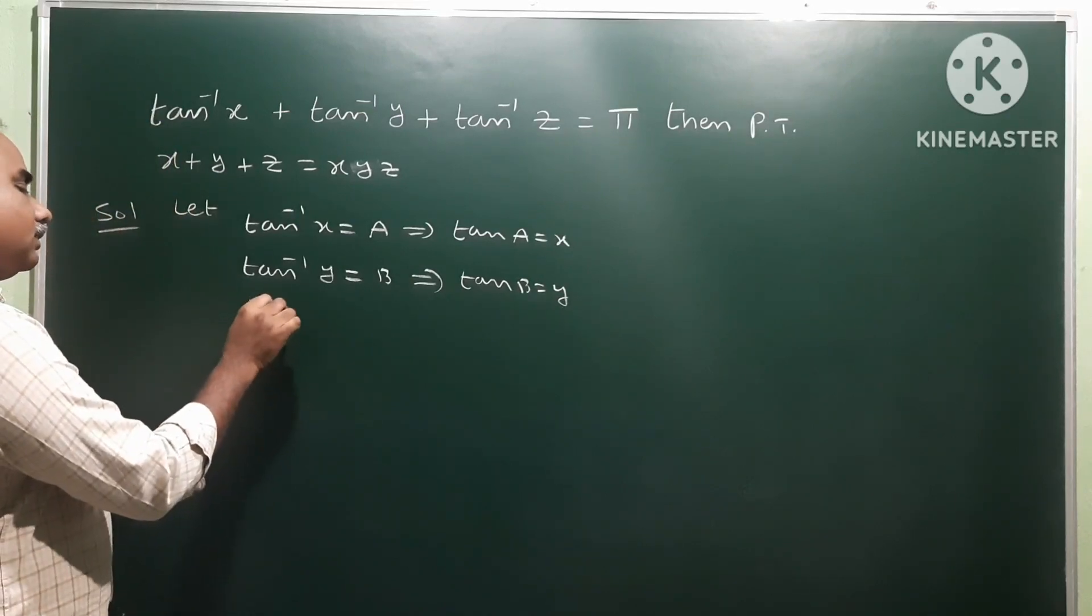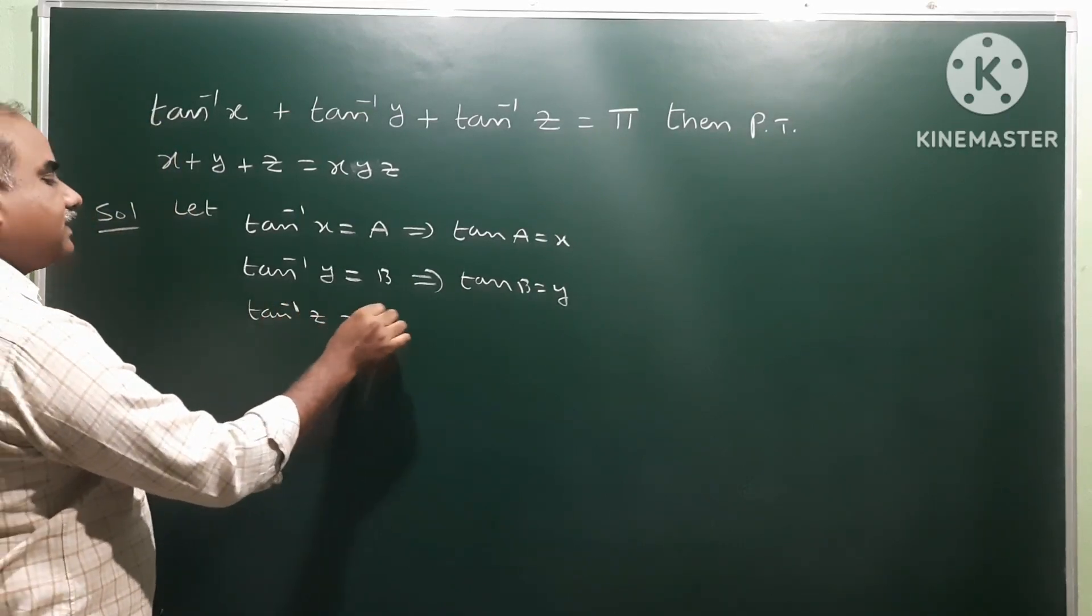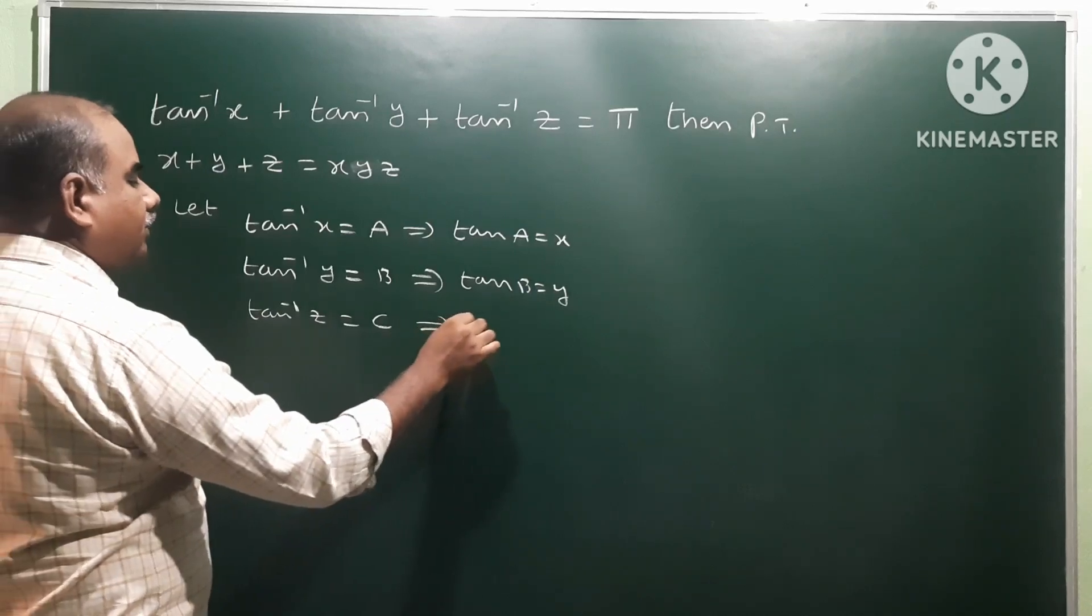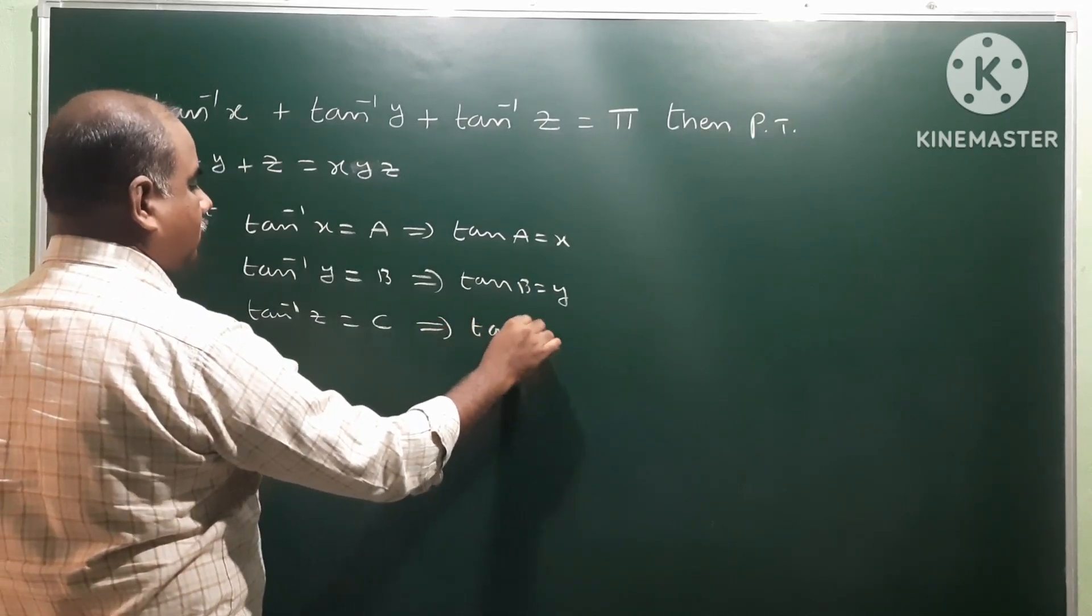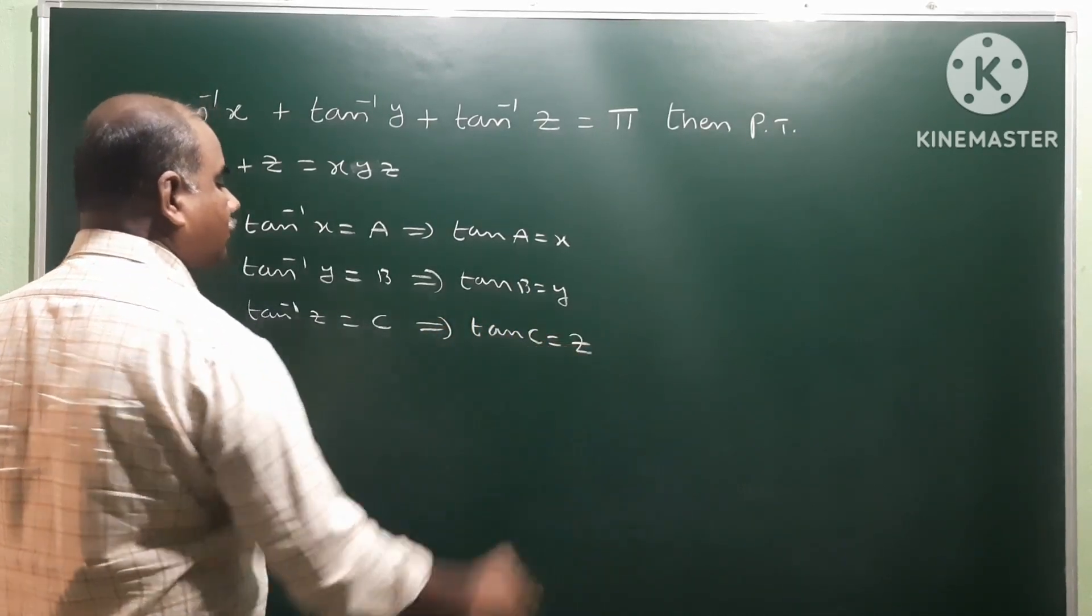And third one, tan inverse z as C. It becomes tan C is equal to z.